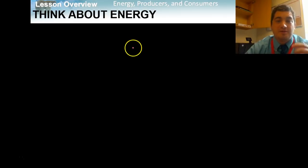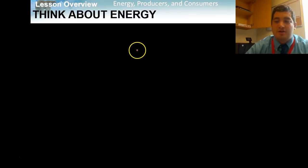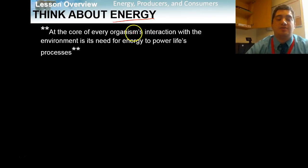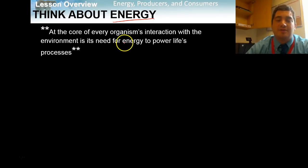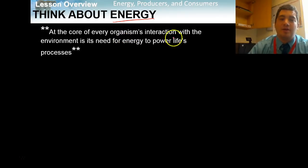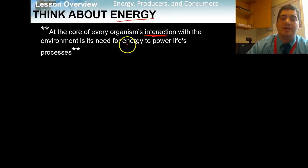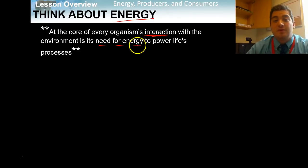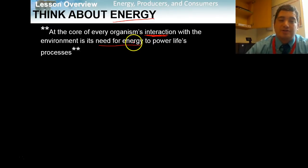So just to start off talking about energies and producers and consumers, we're going to step back and actually talk about our chemistry chapter for a second and think about energy. When we talk about ecology, we talk about organisms interacting with their environment, interacting with each other. Basically every interaction comes down to an organism needing energy, whether it's from another organism or from something else in the environment. Every interaction comes back to needing energy for survival.